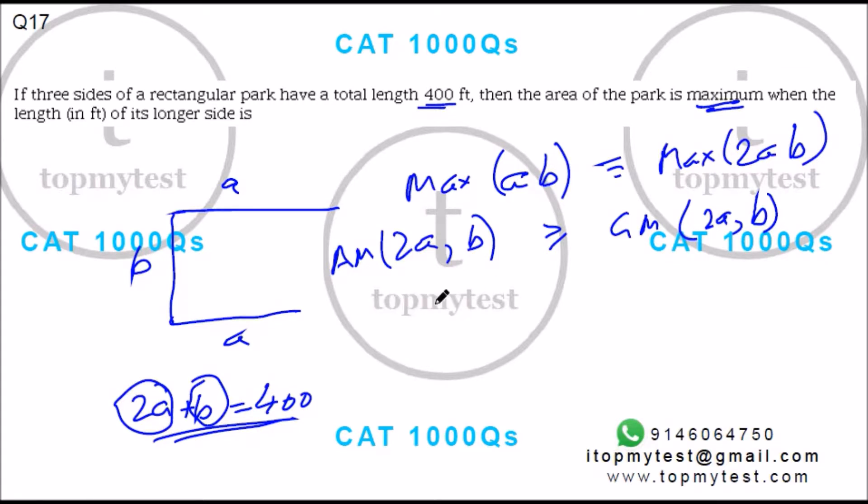The arithmetic mean of 2a and B will be 200. This should be greater than or equal to the geometric mean, so square root of 2a times B.